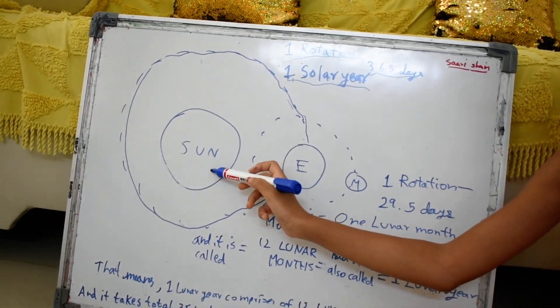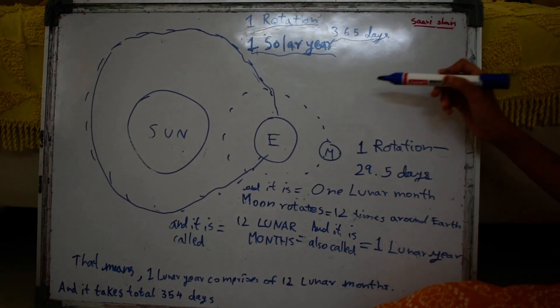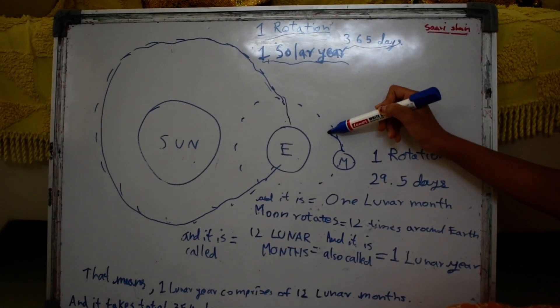So this is the sun, this is the earth, and this is the moon. So the moon rotates around the earth.